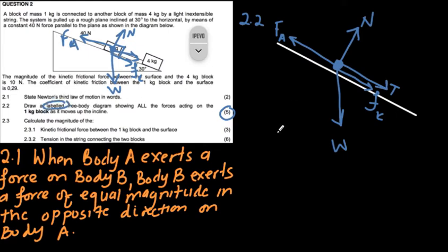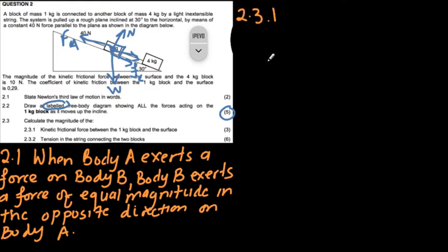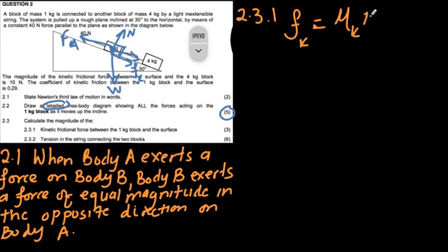Question 2.3 asks us to calculate the kinetic frictional force of the 1 kg block on the surface. The equation we use is: fk equals the coefficient of kinetic friction times the normal force. We have the coefficient of kinetic friction, but we need to find the normal force from the diagram.